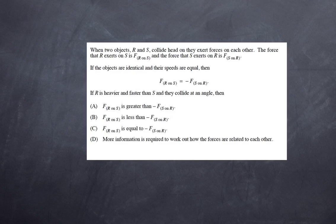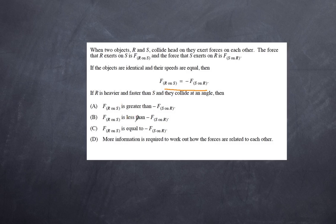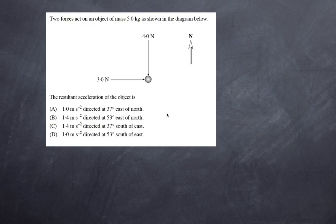Here's the second question: when two objects R and S collide head-on, they exert forces on each other. The force that R exerts on S is F_R on S, and the force that S exerts on R is F_S on R. If the objects are identical and their speeds are identical, that statement is true. Now if R is heavier and faster than S and they collide at an angle, is one force greater, lesser, the same, or is more information required? If you understood the first question — Newton's third law is always true regardless of mass or conditions — the only possible answer is that the forces are equal in magnitude but opposite in direction, which is what the negative symbol represents.